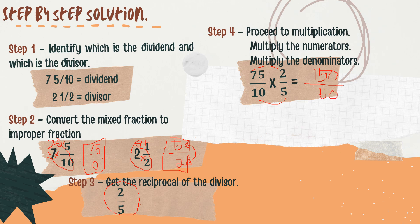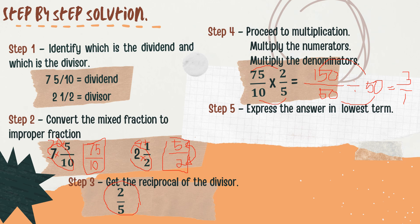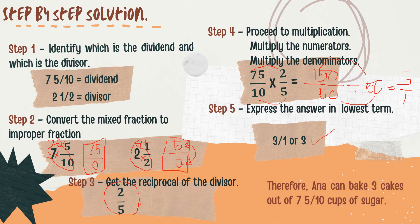150 over 50 can be reduced to lowest terms. The GCF is 50. 150 divided by 50 is 3, and 50 divided by 50 is 1. Don't forget — the last step is to express the answer in lowest terms. So the answer is 3 over 1, or 3. Therefore, Anna can bake 3 cakes out of 7 and 5 tenths cups of sugar.